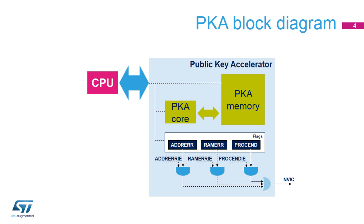The PKA has two error flags: the address error flag (ADDRERRF) and the RAM error flag (RAMERRF). All flags can generate an interrupt if the corresponding interrupt enable bit is set: PROCENDIE, ADDRERRIE, or RAMERRIE.